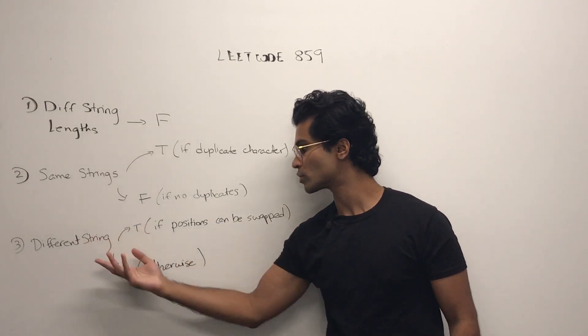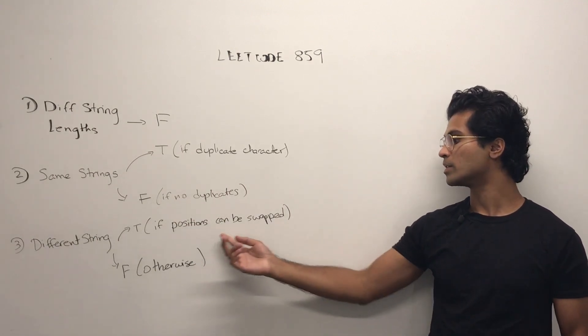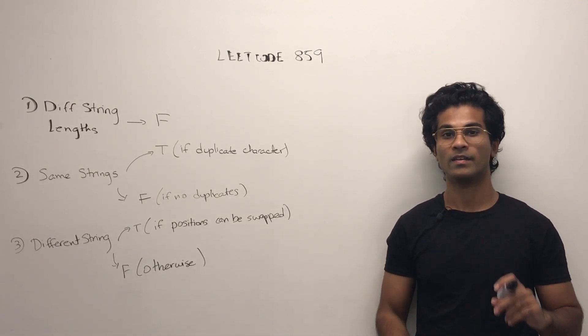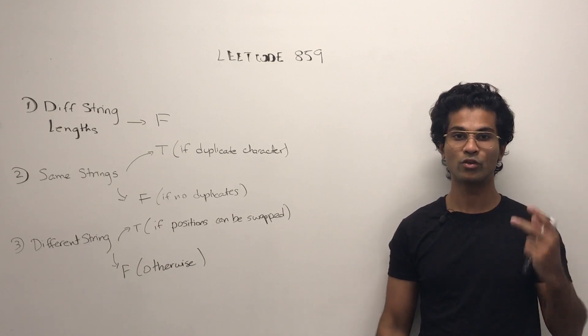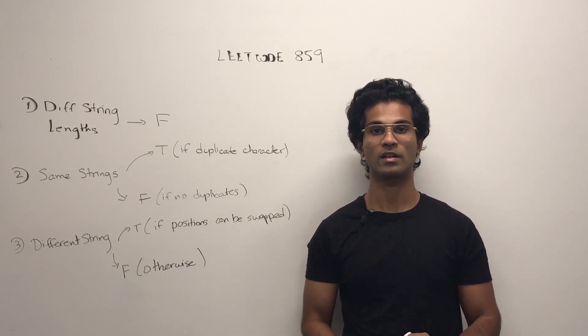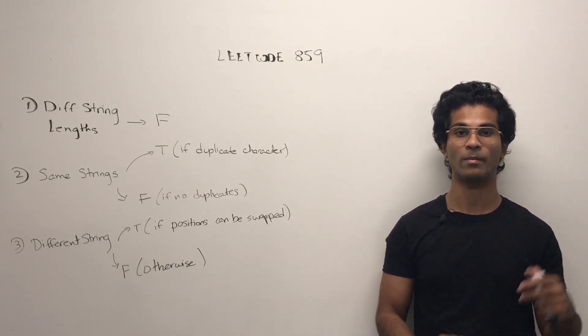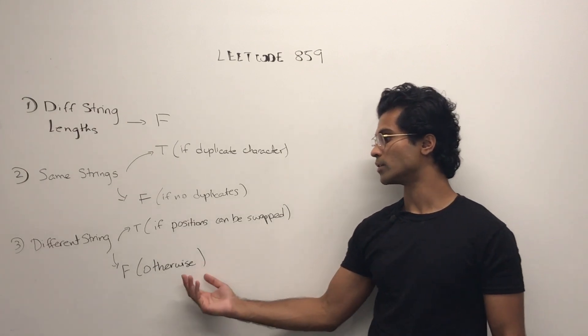And finally if they're different strings it's going to be true only if the positions can be swapped and they can only be different in two positions. So we have to check what are the actual positions, can they be swapped, and we have to make sure that they're only differing by two positions. Otherwise we're going to return false.